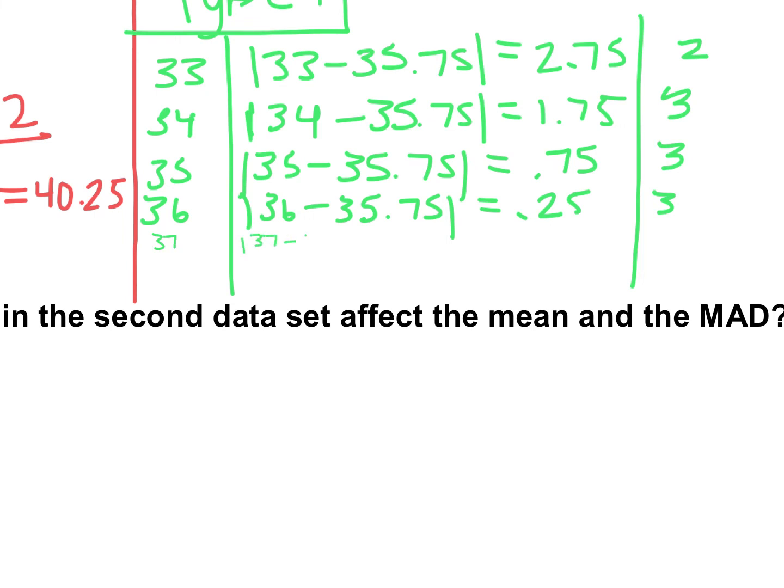Take the absolute value of 37 minus our average of 35.75 gives us 1.25. Now these are going to be positive, so we'll just leave them positive. And how many 37s do we have in our data set? We had two. And we also have a 38. So absolute value of 38 minus the mean of 35.75 gives us 2.25. And we had two of those. And then we had 41. So the absolute value of 41 minus 35.75 gives us 5.25. So that was a bit of an outlier. You can see that it's the furthest away from the mean. And we only had one of those.